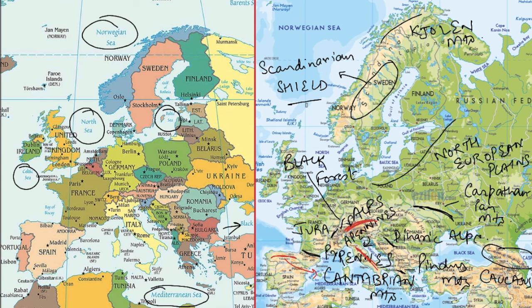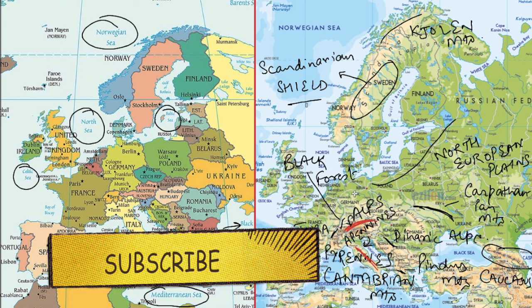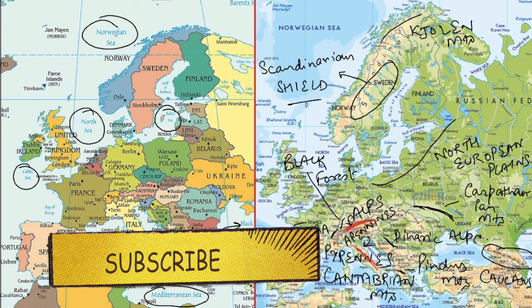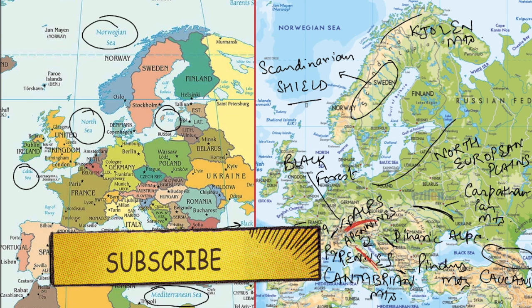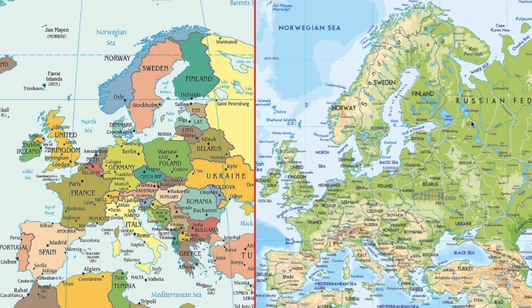In the mapping of Europe, there is no need to go into too much detail because questions from here are generally fewer. If they do come, they are from the important areas. So you must know these mountain ranges and keep revising them again and again. This was the entire mapping of Europe — we hope it was clear. If not, please ask your doubts in the comment section and we will be happy to help. Thank you.